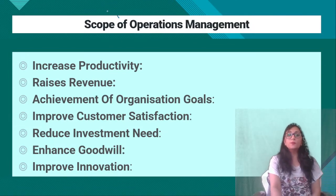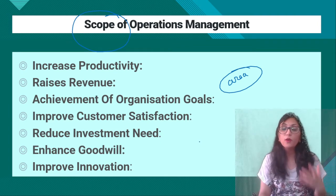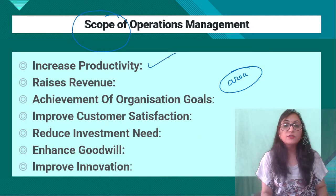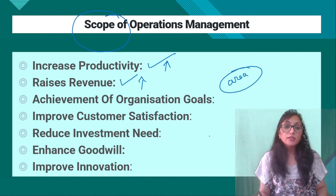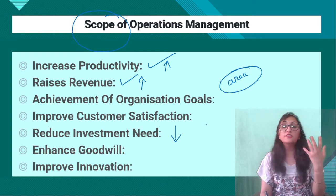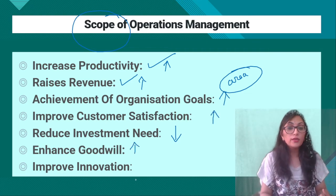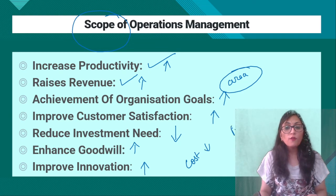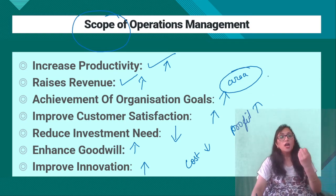Next, what is the scope of operations management? Scope refers to the areas where it is applied. The scope includes: increase productivity, increase revenue, reduce the need for investment, reduce unnecessary expenditure, reduce wastage, align with organizational goals, increase customer satisfaction, enhance goodwill of the company, adopt new technologies, reduce costs, and enhance profits. These are the basic scopes — the areas in which we apply operations management.